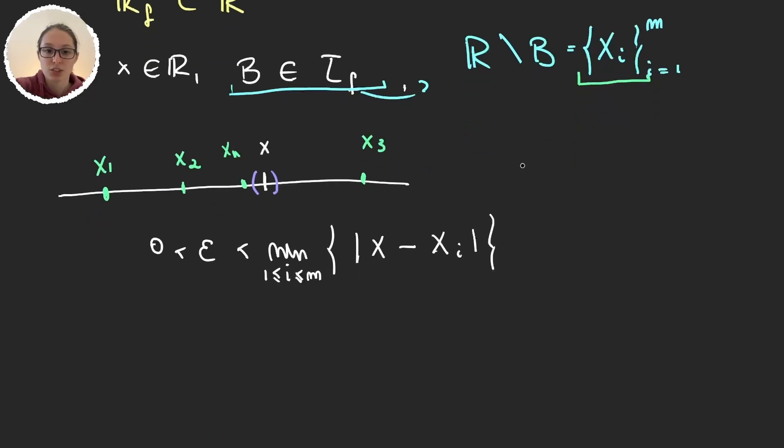And I can just take the interval x minus epsilon, x plus epsilon. This is an element in the standard topology T, that is, the topology of the real numbers. And it's obviously contained in B, so it contains x, that is trivial.